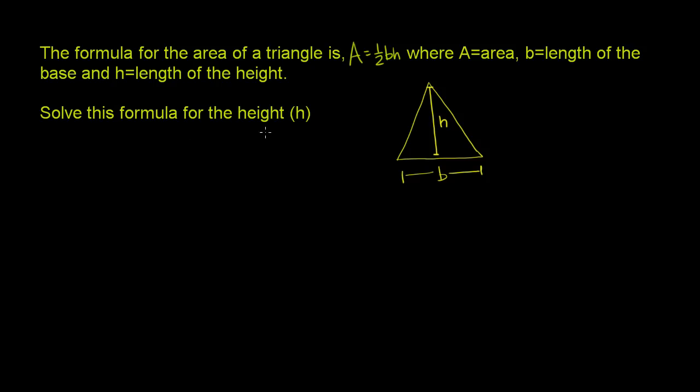Now they want us to solve this formula for the height. So the formula is area equals 1/2 base times height, and we want to solve for h. We essentially want to isolate the h on one side of the equation. It's already on the right hand side, so let's get rid of everything else on the right hand side. I'll do it one step at a time, though we could skip steps if we wanted to.